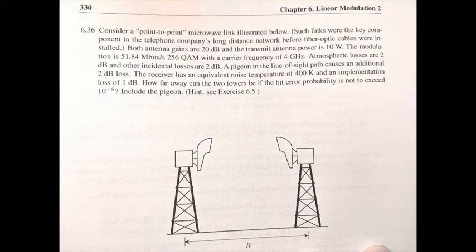Both antenna gains are 20 dB, and the transmit antenna power is 10 watts. The modulation is 51.84 megabits per second, 256 QAM, with a carrier frequency of 4 gigahertz. Atmospheric losses are 2 dB, and other incidental losses are 2 dB.